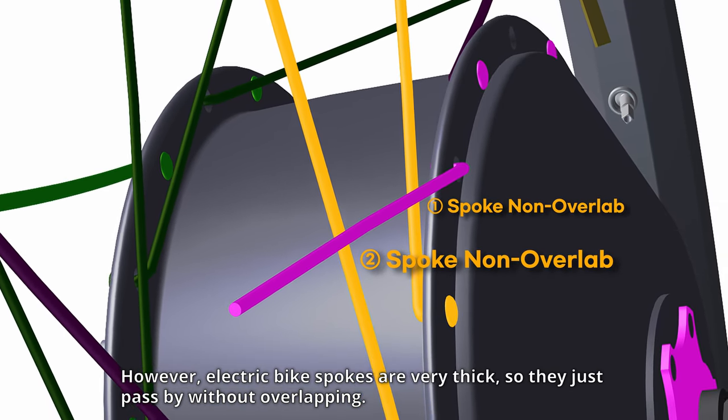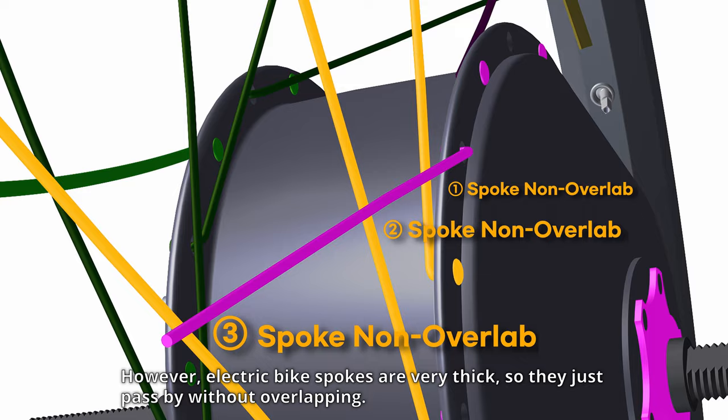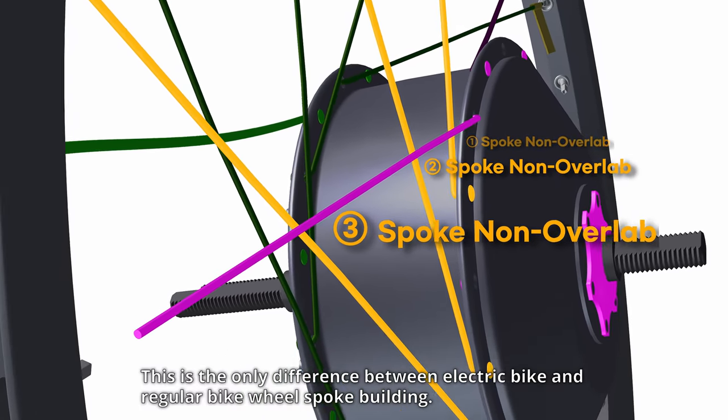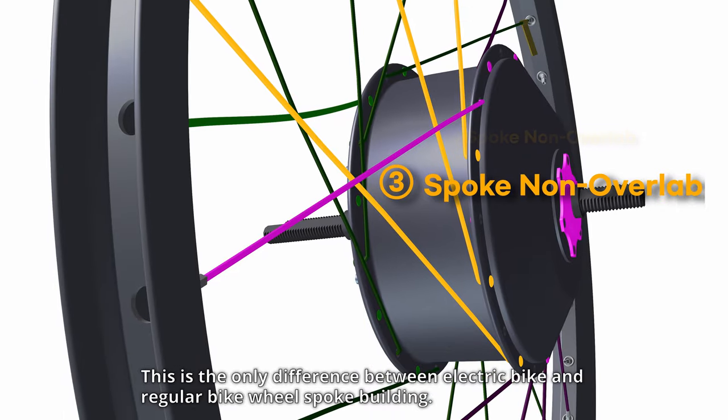However, electric bike spokes are very thick so they just pass by without overlapping. This is the only difference between electric bike and regular bike wheel spoke building.